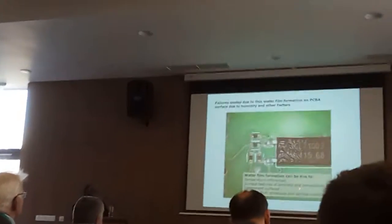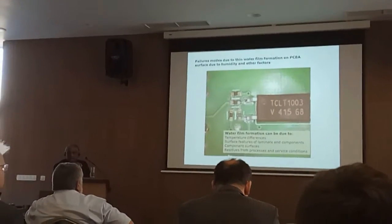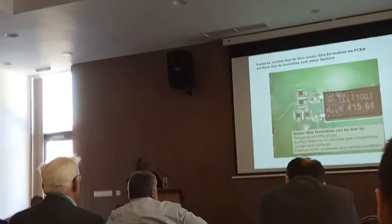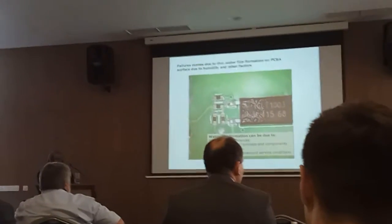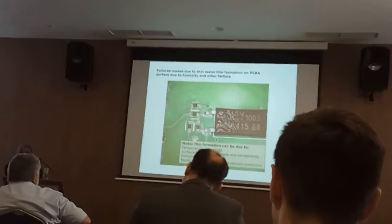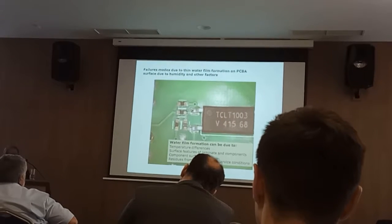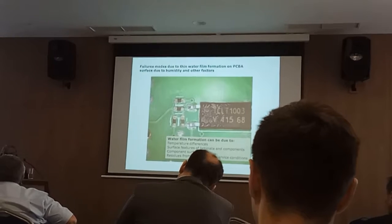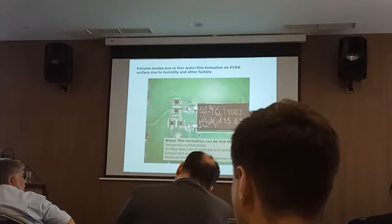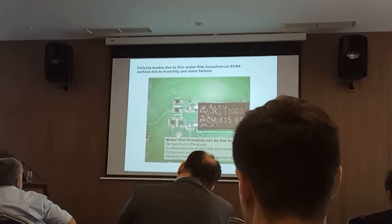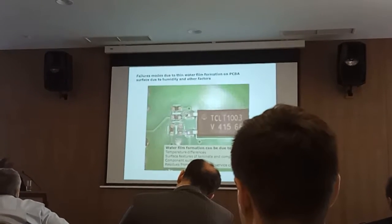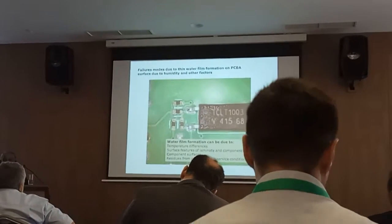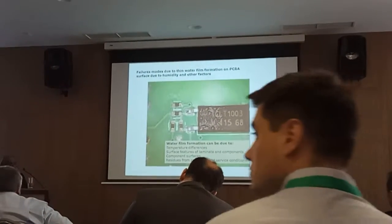Surface details of the laminate layer components and residues from the process and service conditions also contribute to water layer formation. Manufacturing processes use non-clean flux systems, and those residues can also absorb water on the PCB. All these factors create the water layer formation, and this water layer will act as an electrical layer connecting between points, causing corrosion problems. That is what I mean by the image of the environmental conditions.